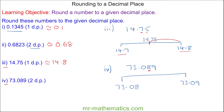For question four, the eight is the second number after the decimal point, so it is between 73.08 and 73.09. The nine tells you it is approximately closer to 73.09, so the answer is 73.09 to two decimal places.